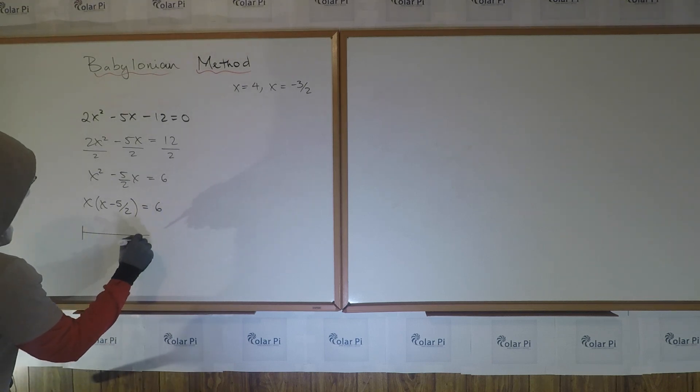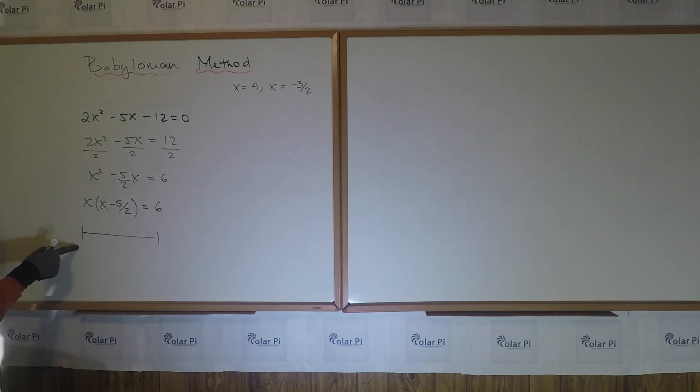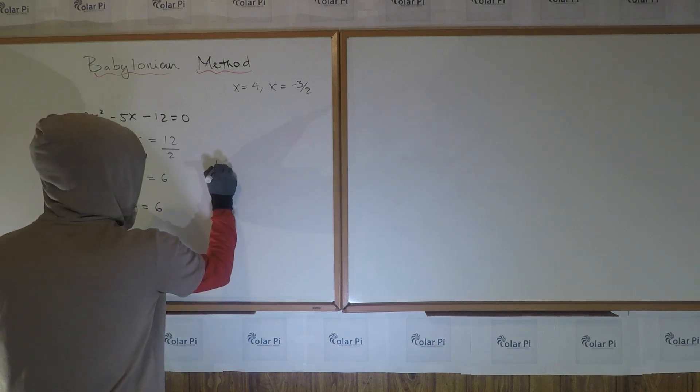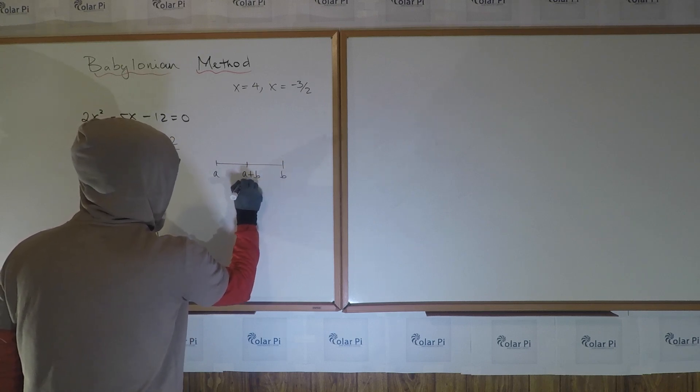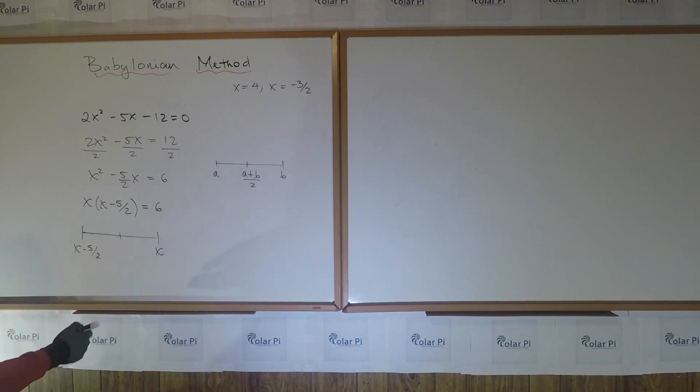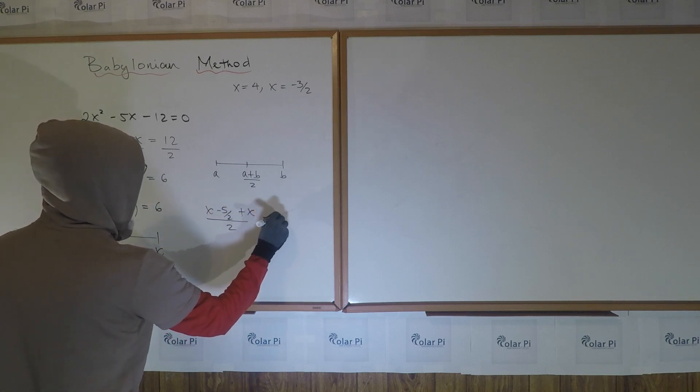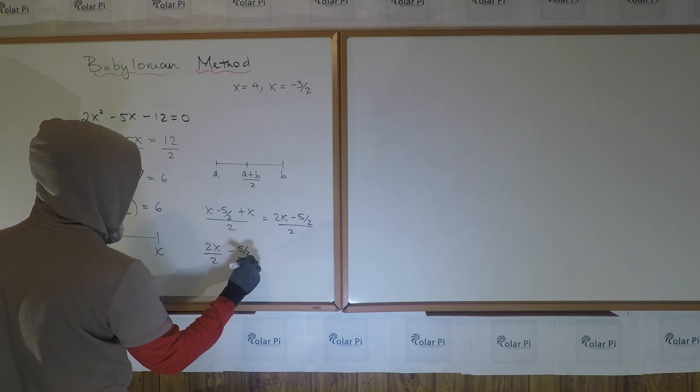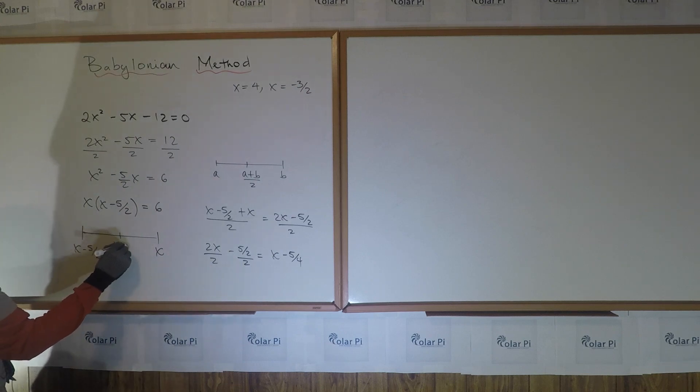And then, our number line. Here goes the smaller of these two factors, which is x - 5/2. And then, the bigger factor is x. And then, we want to know the midpoint. Now, I did this a bit quicker than the number line earlier. But if you have a here and b here, the midpoint is their average, a + b over 2. So what we have to do to find the midpoint is add these two and divide them by 2. So that means (x - 5/2 + x)/2. That's (2x - 5/2)/2. That's 2x/2 - (5/2)/2, which is x - 5/4. So the midpoint here is x - 5/4.